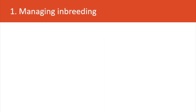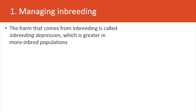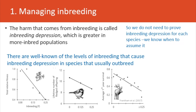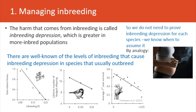Let's go through those three things. First, managing inbreeding. The harm that comes from inbreeding is called inbreeding depression, and this will be greater in more inbred populations. There are very well-known levels of inbreeding that cause inbreeding depression in species that usually outbreed. You can measure a great variety of fitness characters in many organisms and see very similar patterns, as shown in these three examples. So we don't need to prove inbreeding depression for every species — we know when we can assume it. By analogy, we wouldn't ask each mother to do an experiment by smoking when pregnant to see whether it would harm their baby.